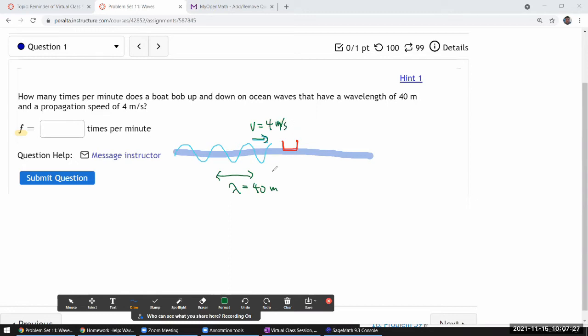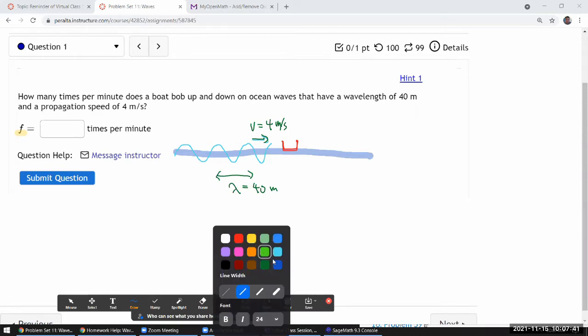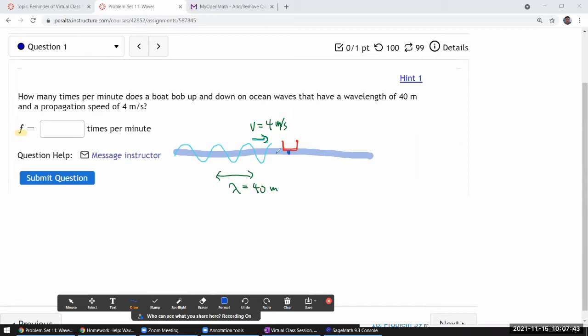So I want you to visualize what happens to this boat as this wave goes, first comes towards the boat, and moves past the boat. The effect of this wave will be, if you are tracking this point on the water, as the crest of the wave comes up, this point will go up.